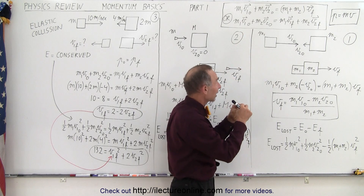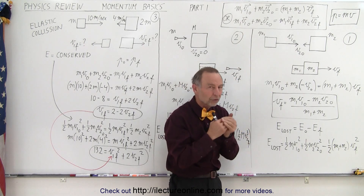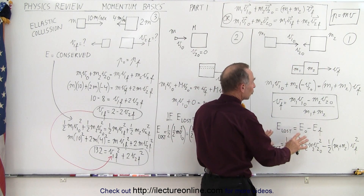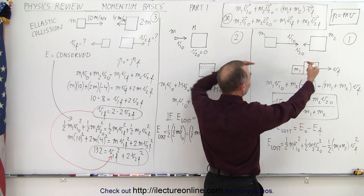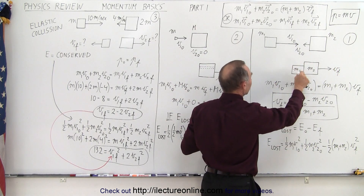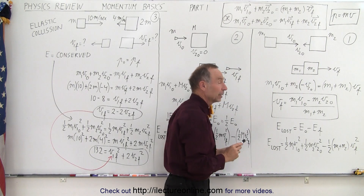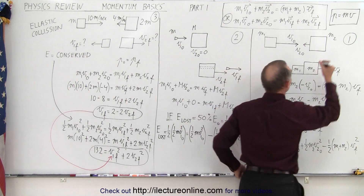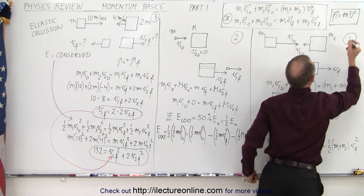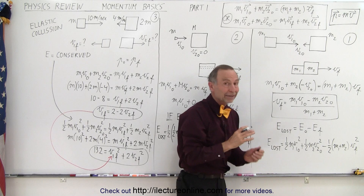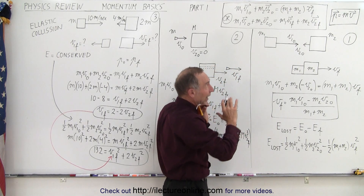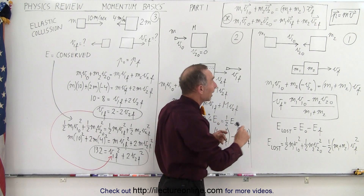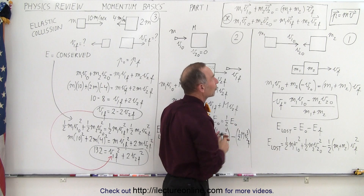So we either have the situation where they stick together or where they don't. If they stick together, energy will be lost. You can see two objects that collide, stick together, and have a single final velocity. Remember that velocity in momentum is a vector quantity, so we put vector notation on P and V to indicate that direction is important.